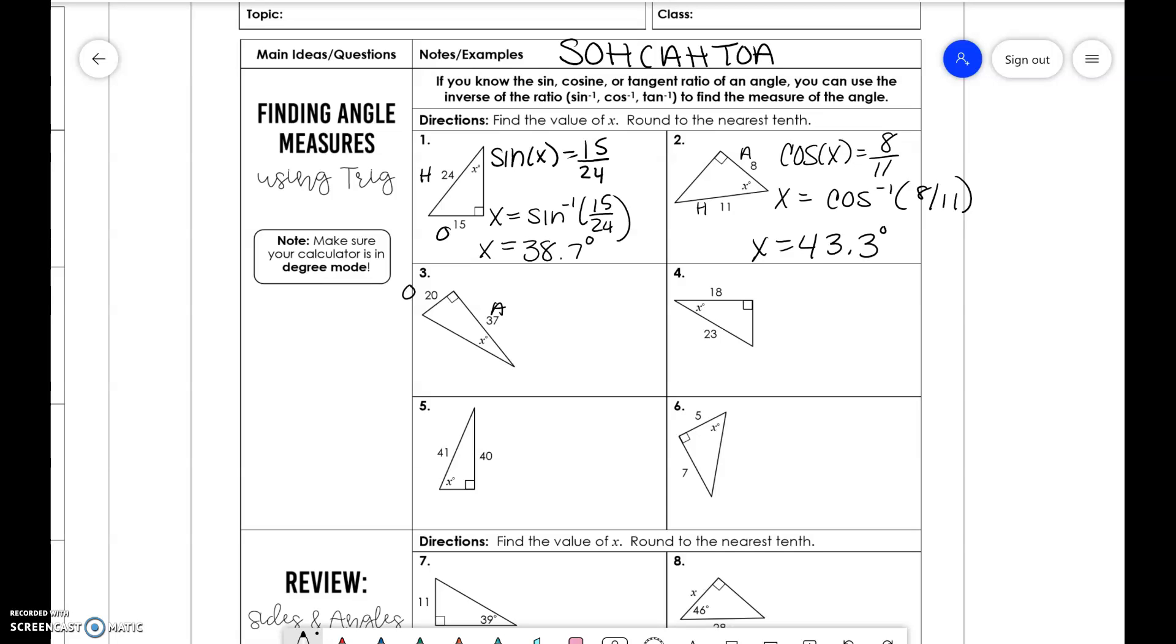Opposite and adjacent. So tangent of x is equal to 20 over 37. x is equal to tangent inverse of 20 over 37. Cosine of x is equal to 18 over 23. So x is equal to 38.5 degrees.